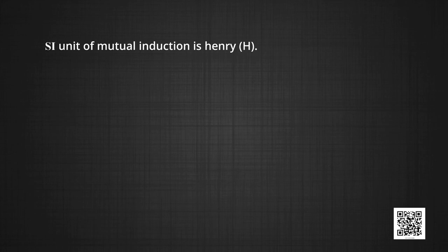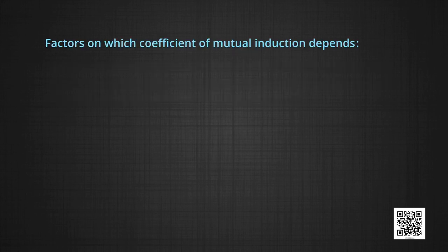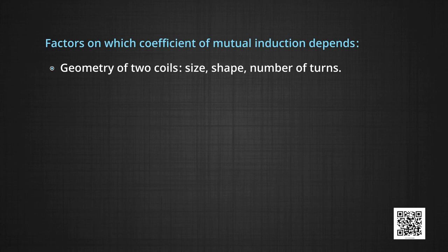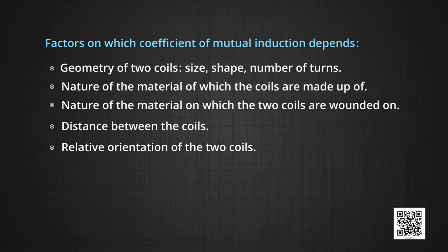SI unit of mutual induction is Henry represented by capital H. Coefficient of mutual induction is said to be 1 Henry when the rate of change of current through one coil is 1 ampere per second and this induces an EMF of 1 volt in the other coil. Factors on which coefficient of mutual induction depends are: geometry of the two coils — that is the size, shape, number of turns — nature of the material the coils are made up of, nature of the material on which the two coils are wound on, distance between the coils, and relative orientation of the two coils.